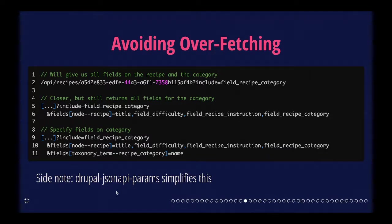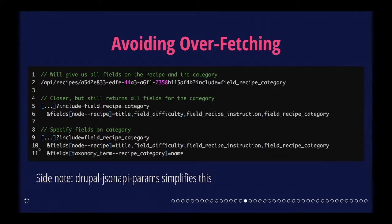Another common issue is overfetching with JSON API. By default, JSON API gives you all the stuff, which is definitely useful. But often — think of a teaser or a grid of items — you might only need a few fields, maybe three rather than everything. Being specific about what you get back will have a pretty substantial impact on your payload. If we want to do that with JSON API, there are query string parameters we can add.